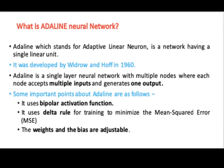So what is an ADALINE neural network? ADALINE stands for Adaptive Linear Neuron. This kind of neural network has a single linear unit. It was developed in 1960 by Widrow and Hoff.